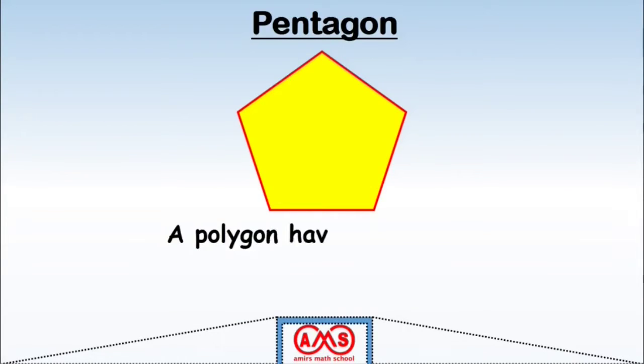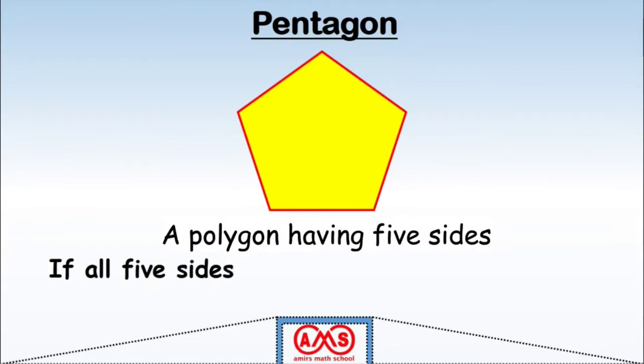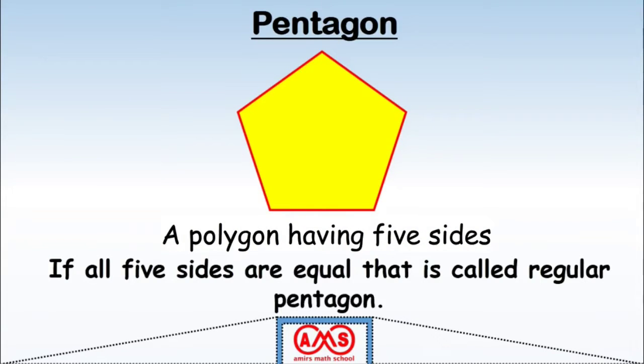A pentagon is a polygon having five sides. If all five sides are equal, that pentagon is called a regular pentagon.